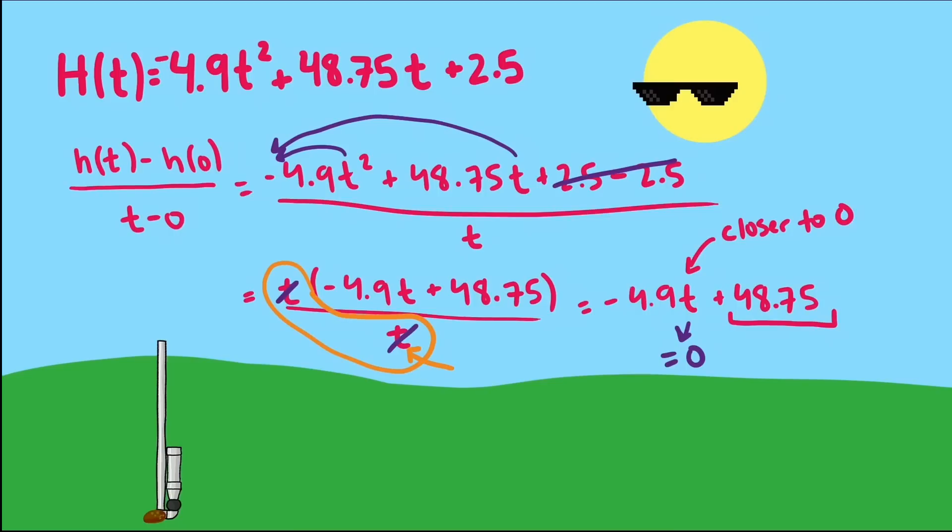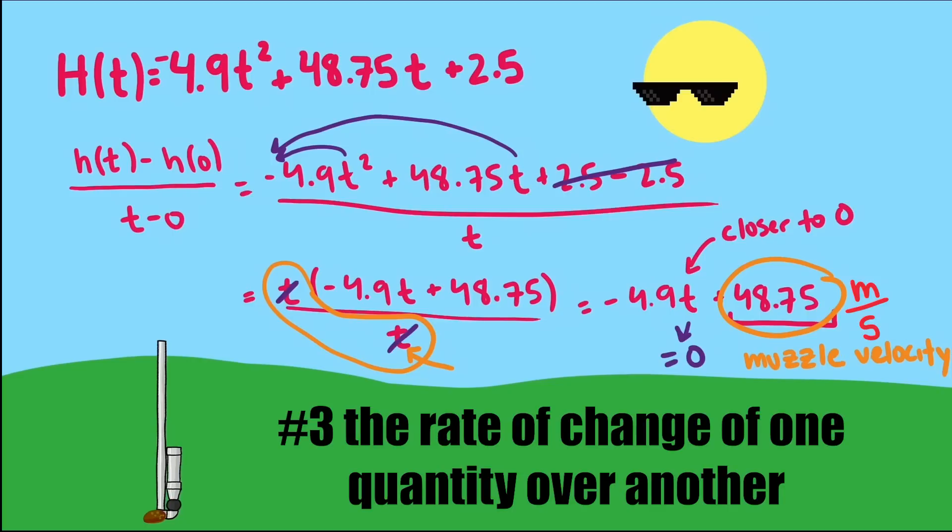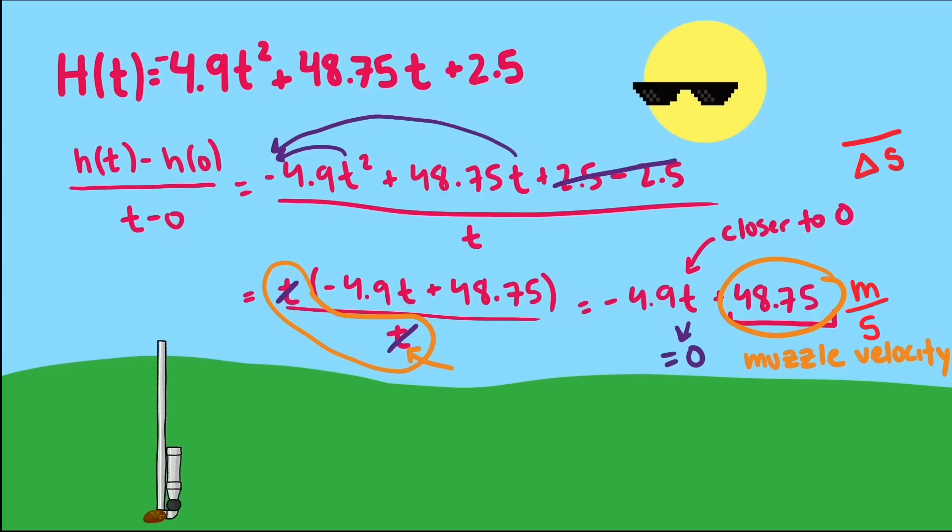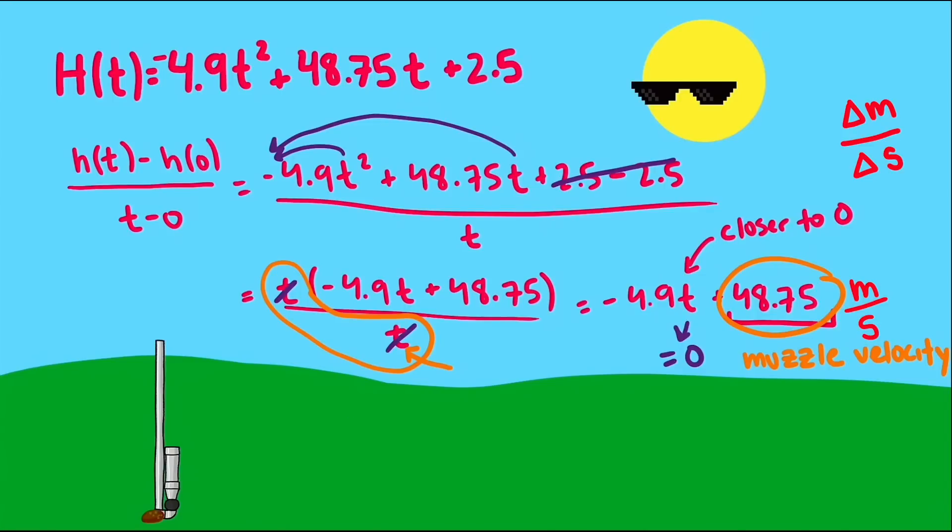Now that we have a value of 48.75, we can interpret it as the muzzle velocity, but we can also use meaning number three and interpret it as a converting tool that converts a small change in time, around t equals zero at least, to a change in distance or height. The change in time from zero to 0.01 seconds can be converted to change in distance, with 48.75 meters per second, times 0.01 minus 0 seconds, which is 0.4875 meters.